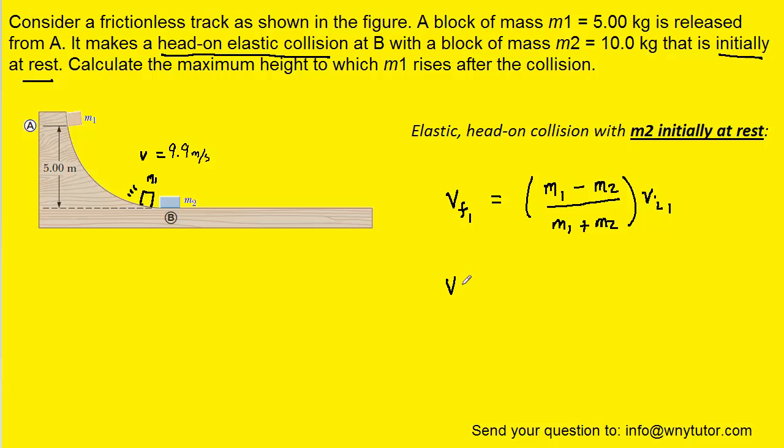Now that we have established that, it's very convenient to use and find the final velocity of object 1. All we have to do is plug in the masses and the initial velocity of object 1. Now, the masses were given in the problem. m1 is 5 kilograms, m2 is 10 kilograms. So we can fill those in.